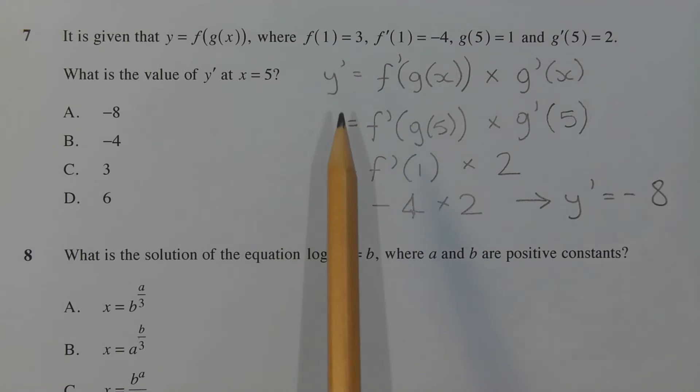So y dash is equal to f dash of 1 times 2, and f dash of 1 is defined as negative 4, so y dash is equal to negative 4 times 2, which is equal to negative 8. Therefore the correct answer is option A.